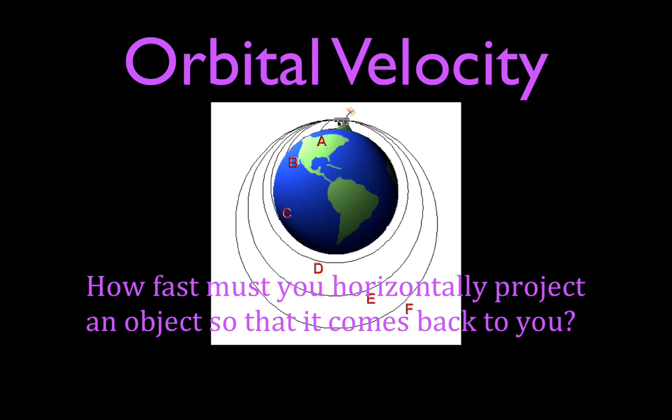So really what we want to know is what is the orbital velocity one meter above the Earth's surface. So we're going to kind of figure out how fast must you horizontally project an object, so it goes all the way around the Earth, comes back to you at this very same place.